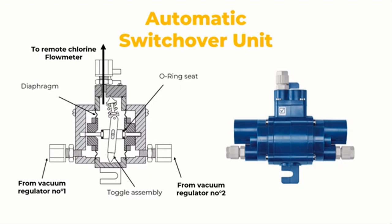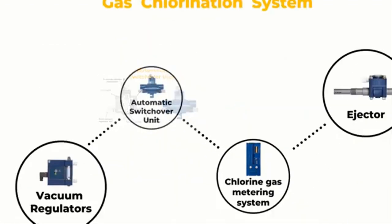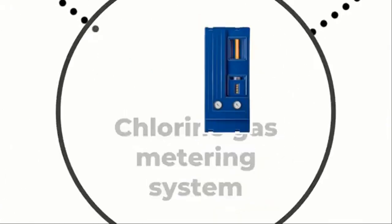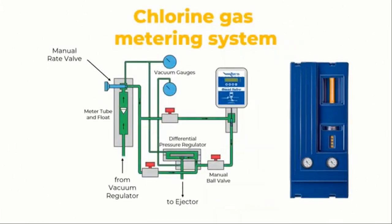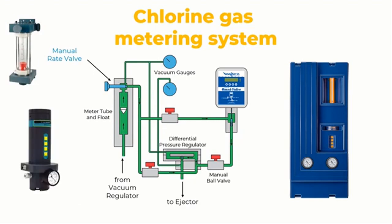The chlorine gas metering system is the third piece of equipment. It is positioned between the vacuum regulator and the ejector to provide a visible indication of the chlorine gas supply rate. A manual rate control valve will be placed after the flow meter tube in every gas chlorination system. Installation of an automatic control valve between the flow meter tube and the ejector is also possible. Differential pressure regulators are optional and can also be added.